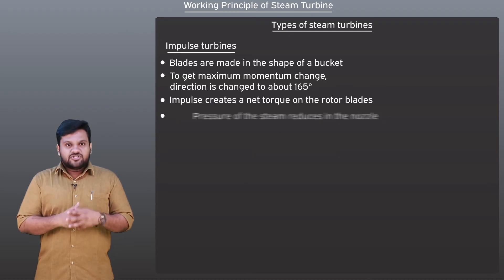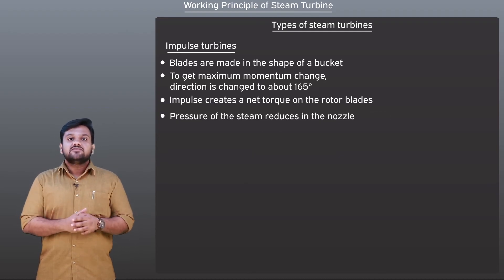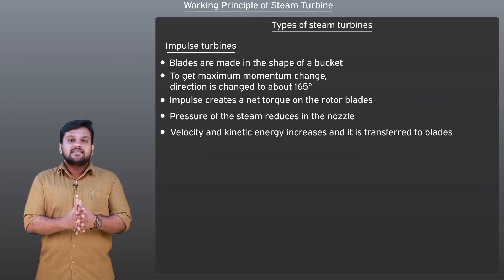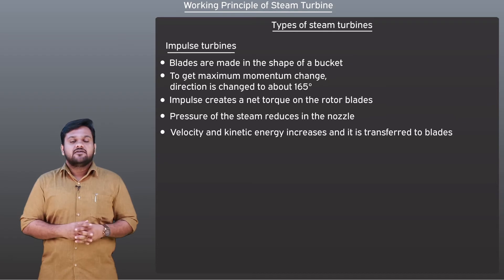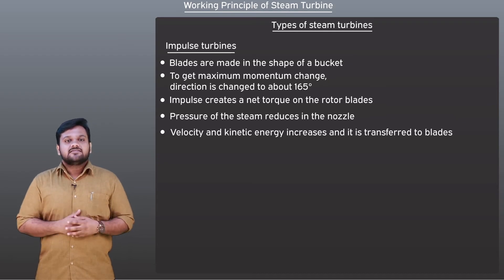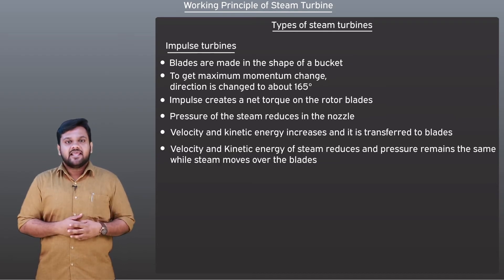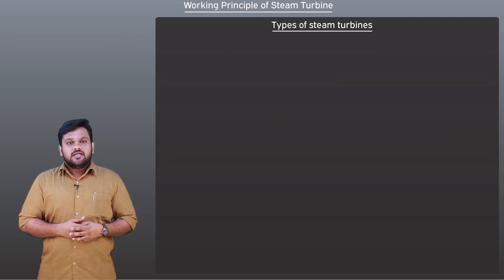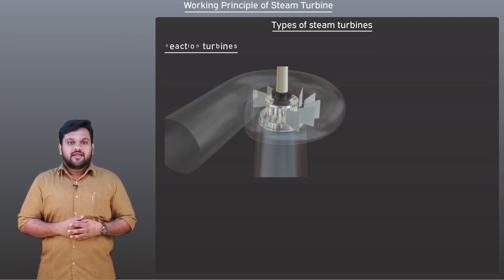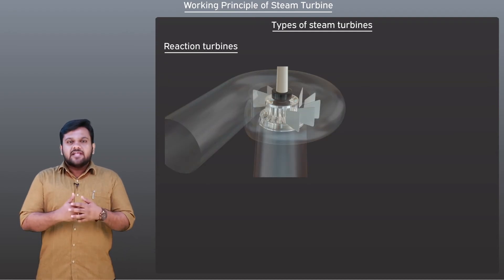The pressure of the steam reduces in the nozzle and its velocity and kinetic energy increases. This kinetic energy is transferred to the blade. After this, the velocity and kinetic energy of the steam reduce while the pressure remains the same as the steam moves over the blade.